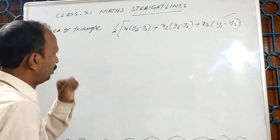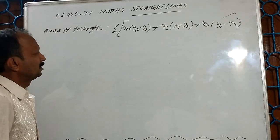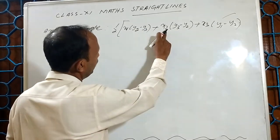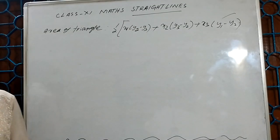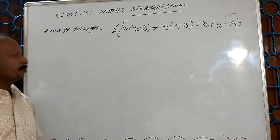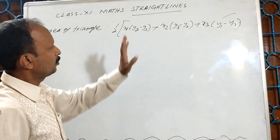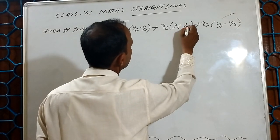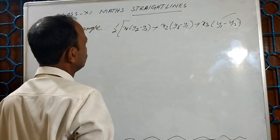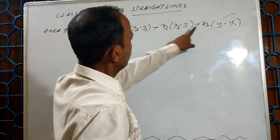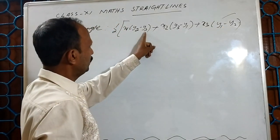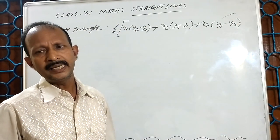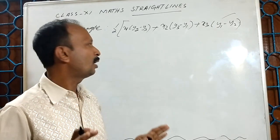Listen — there is one order, one pattern coming. x1, x2, x3. Similarly here it is coming: y2 minus y3, y3 minus y1, y1 minus y2. There is definitely one pattern which is easy to remember — there is no doubt at all. Let us prove this.